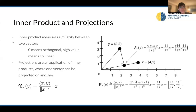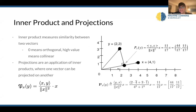The inner product measures similarity between two vectors. If you have vector X and vector Y, zero means orthogonal — they're very dissimilar — and a high value means they're collinear, very similar to each other. Projections are an application of inner products, where one vector can be projected onto another. The idea behind reconstruction is that if I have two vectors in the basis of a certain vector I want to reproduce, by using some linear combination of those vectors, I can reconstruct my exact signal, given that these are orthogonal vectors in the basis I'm working in.